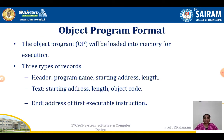Next, we will see the object program format. The object program will be loaded into memory for execution. There are three types of records: header record, text record, and end record. There will be only one header record and one end record. There may be more than one text record — depending on the program, the number of text records will vary. The header record contains the program name along with the starting address and length of the program. The text record contains the starting address of that particular text record, its length, and the object code. The end record contains the address of the first instruction to be executed.